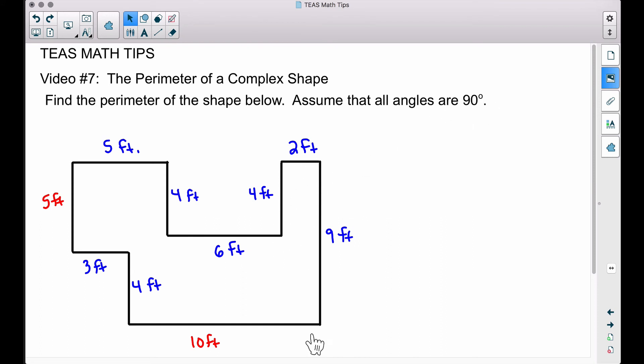Now that we have all of our sides, we can add up all these sides to get the perimeter. So here's all those sides, and all I did here was start with the 5 plus 4 plus 6 plus 4 plus 2 plus 9 plus 10 plus 4 plus 3 plus 5. Adding up all that, a perimeter of 52 feet.